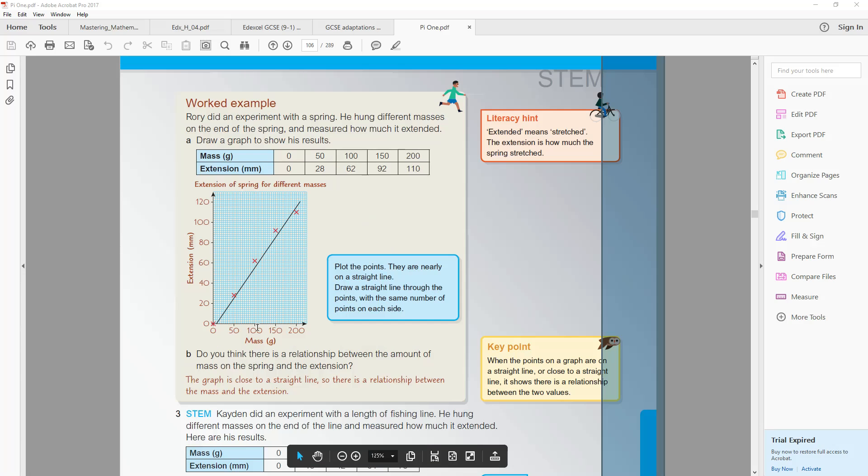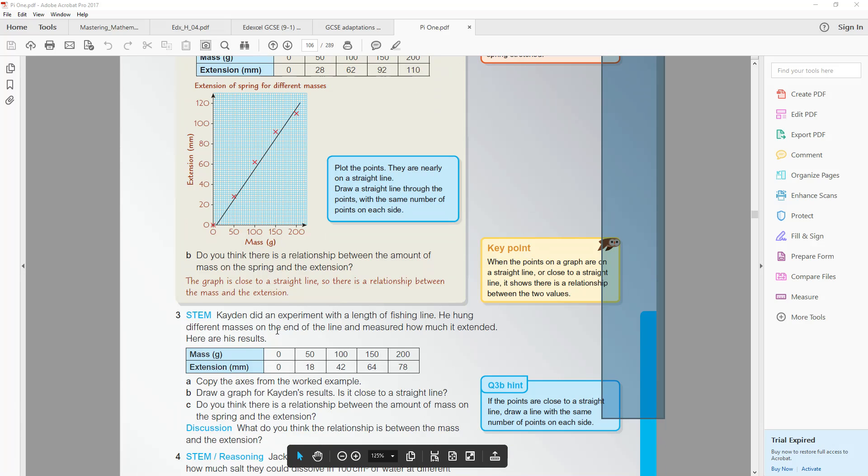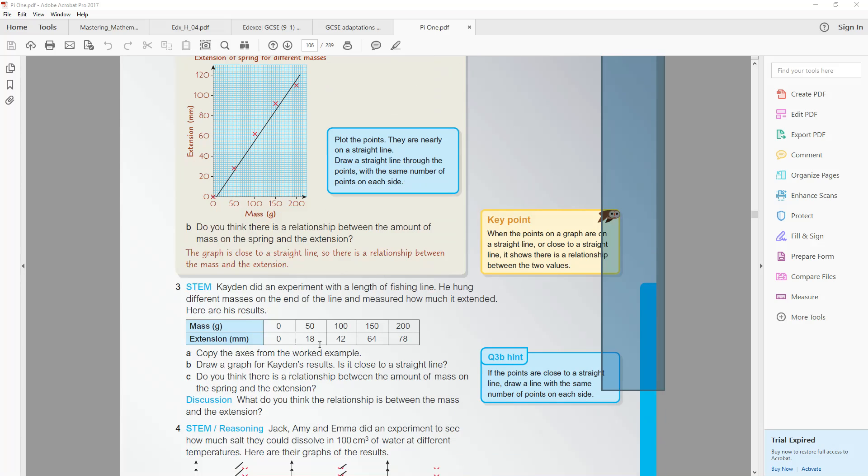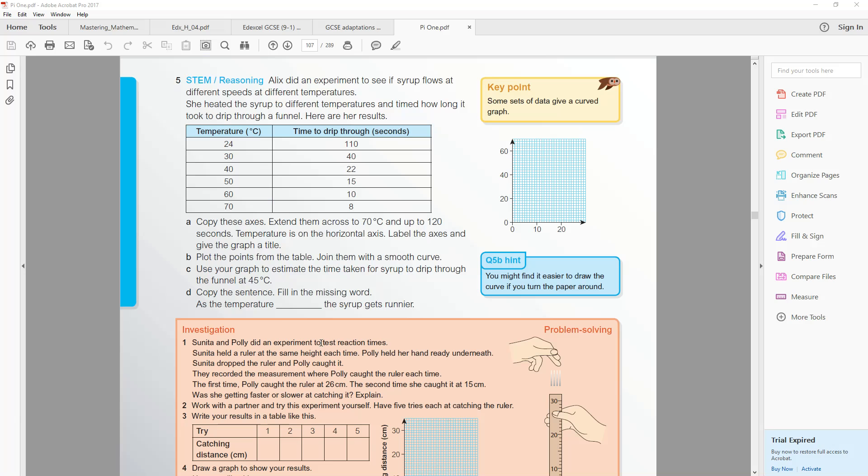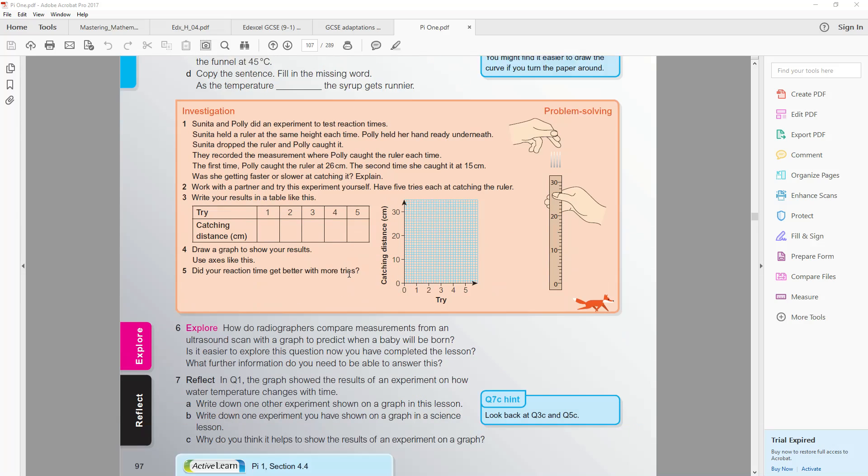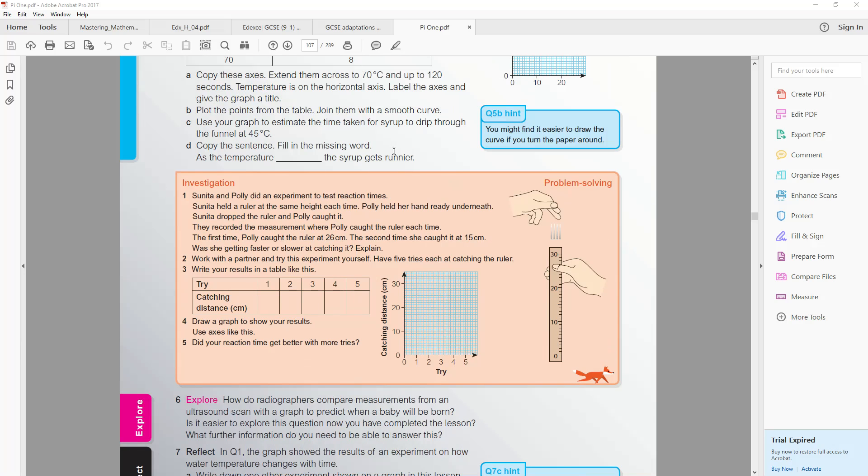And then once you've done that, plot the points and then answer the questions. Once you've done two, move on to three, which is very similar to the example we've just done, four, five. And you can stop at five for today.